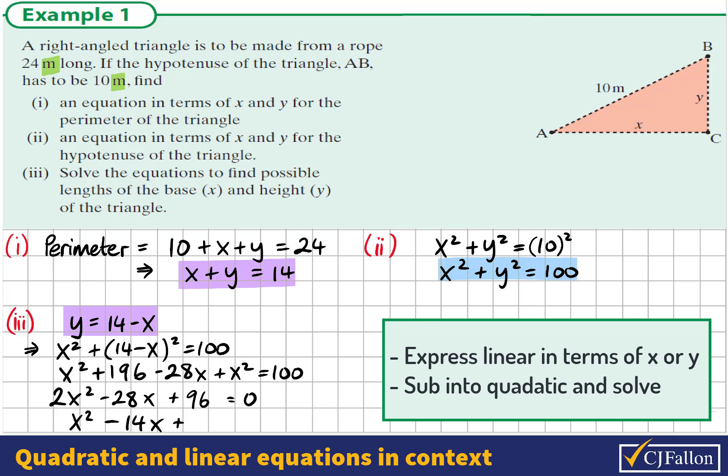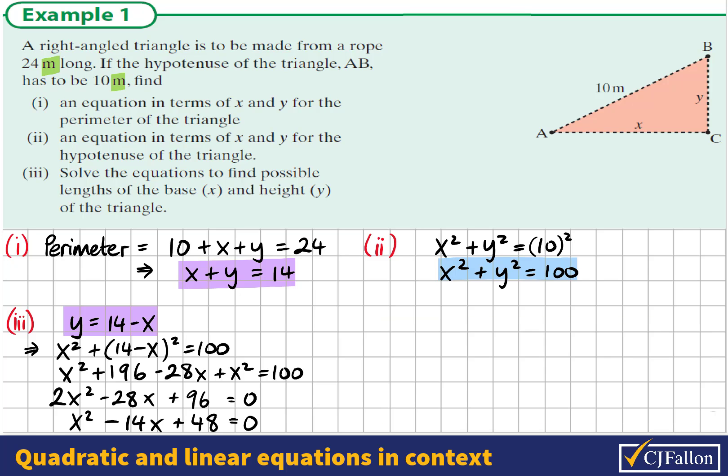So let's solve this quadratic equation. We'll factorize it first. So we're thinking about the factors of x squared and the factors of plus 48 that add to negative 14. And we will see that 6 times 8 is 48, but negative 6 times negative 8 adds to negative 14. So these are our factors. Therefore, x equals 6 and x equals 8 are our two solutions.